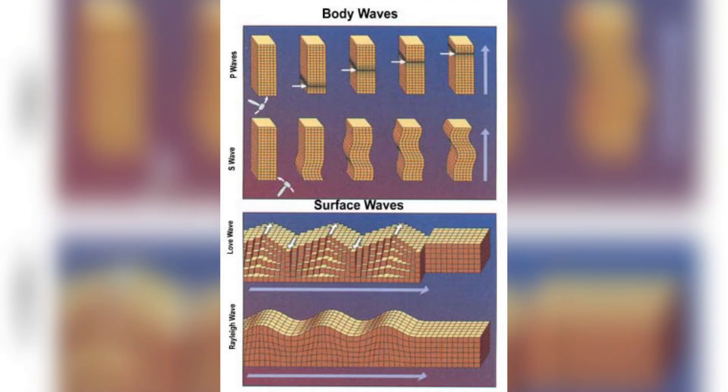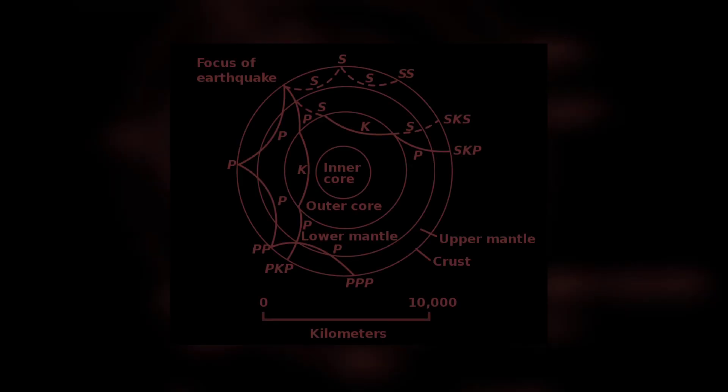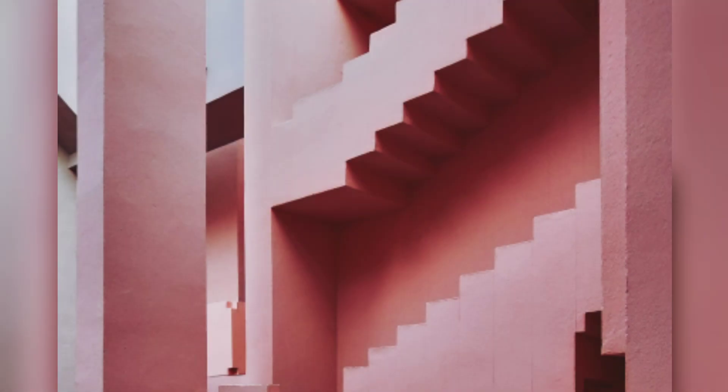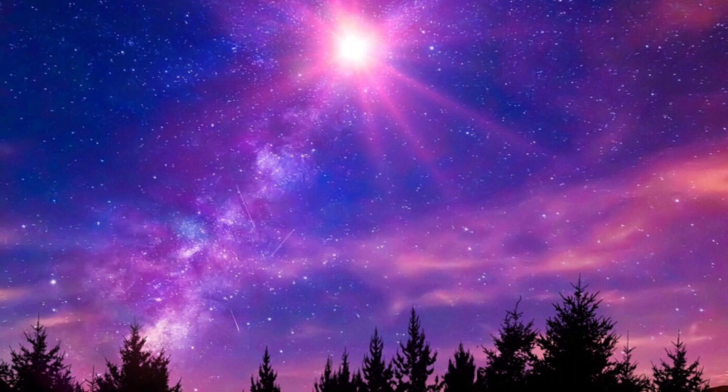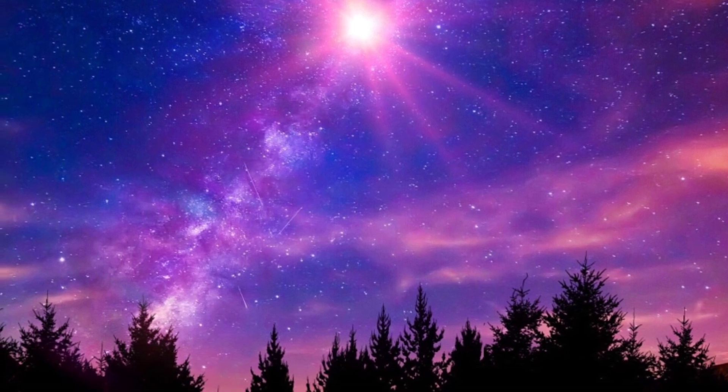This can be illustrated by the P-wave and the S-wave of an earthquake. The P-wave travels faster than the S-wave because it can travel even through fluid. But the S-wave arrives after the P-wave because it can travel only through solid. Here, you can assume the P-wave as photons and the S-wave as bosons.